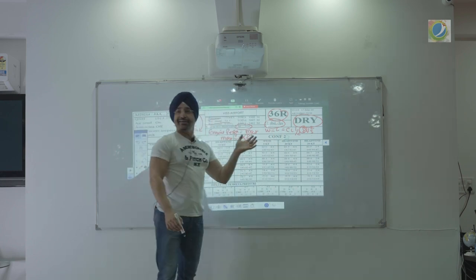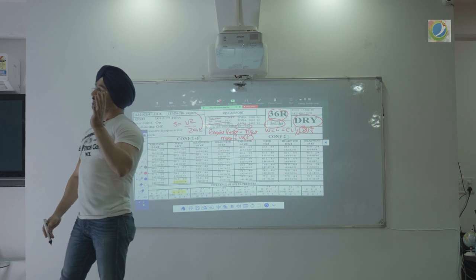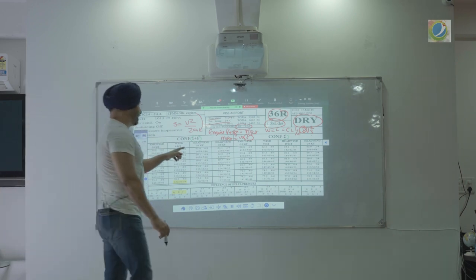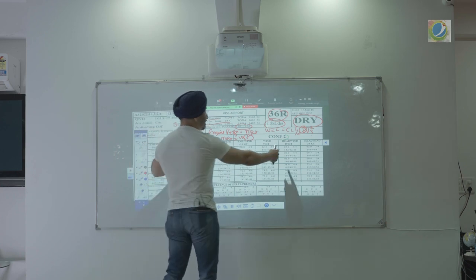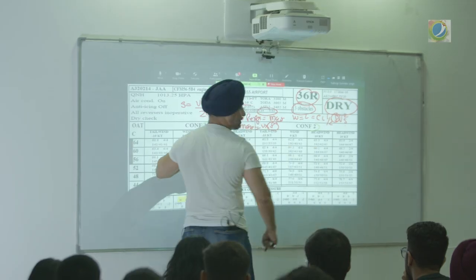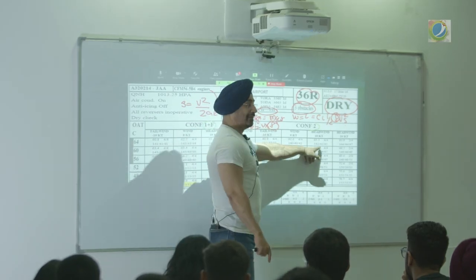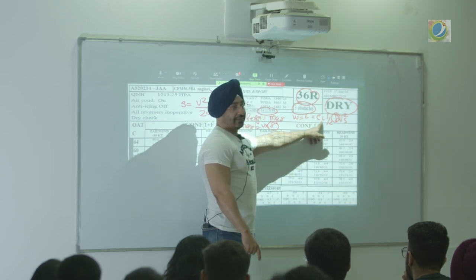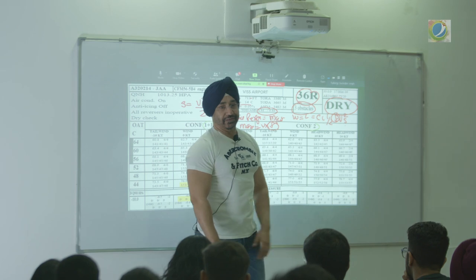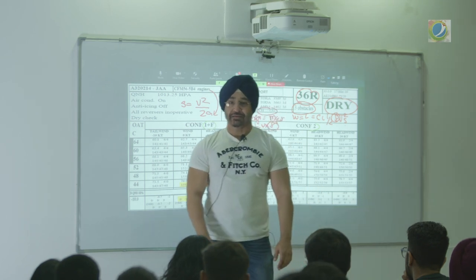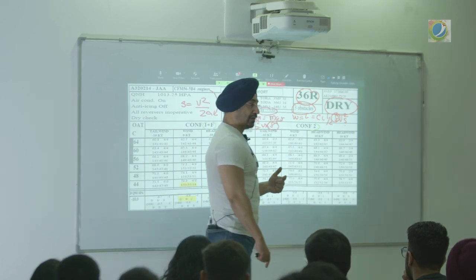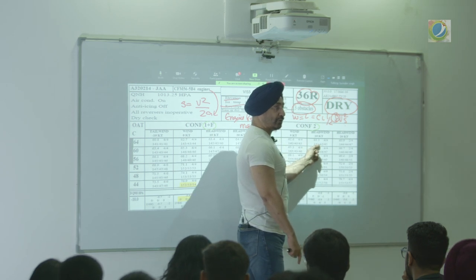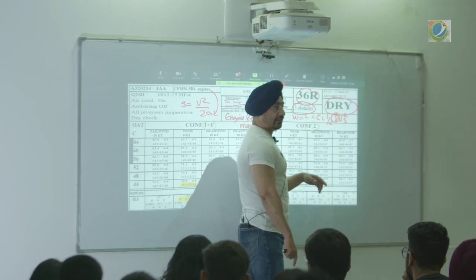Trust me, this is an Airbus chart and it is very simple. If your flap setting is more, can you see — the weight is the same, but what happens to your speeds? They are reduced, because you have increased the coefficient of lift. So obviously, if you have a shorter runway length you can use a higher flap setting, because your take-off speed is reduced — because your lift is increased.